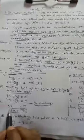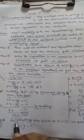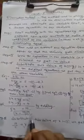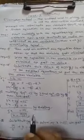Since one Y term is positive and the other is negative, we add the two equations to eliminate Y. Adding gives: 3X plus 2X equals 5X, and 15 plus 4 equals 19. So 5X equals 19, therefore X equals 19 upon 5.